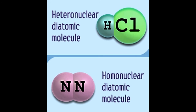A covalent bond is a chemical bond that arises due to sharing of electrons between atoms. Diatomic molecules are usually formed by covalent bonding. This post uses various examples of diatomic molecules to give you a better understanding of the concept.